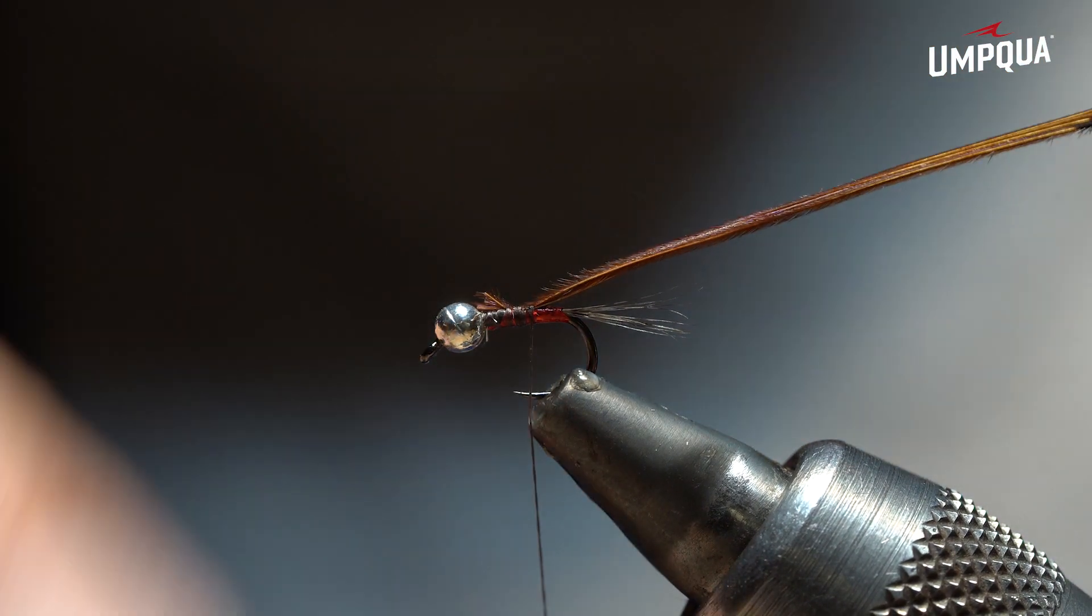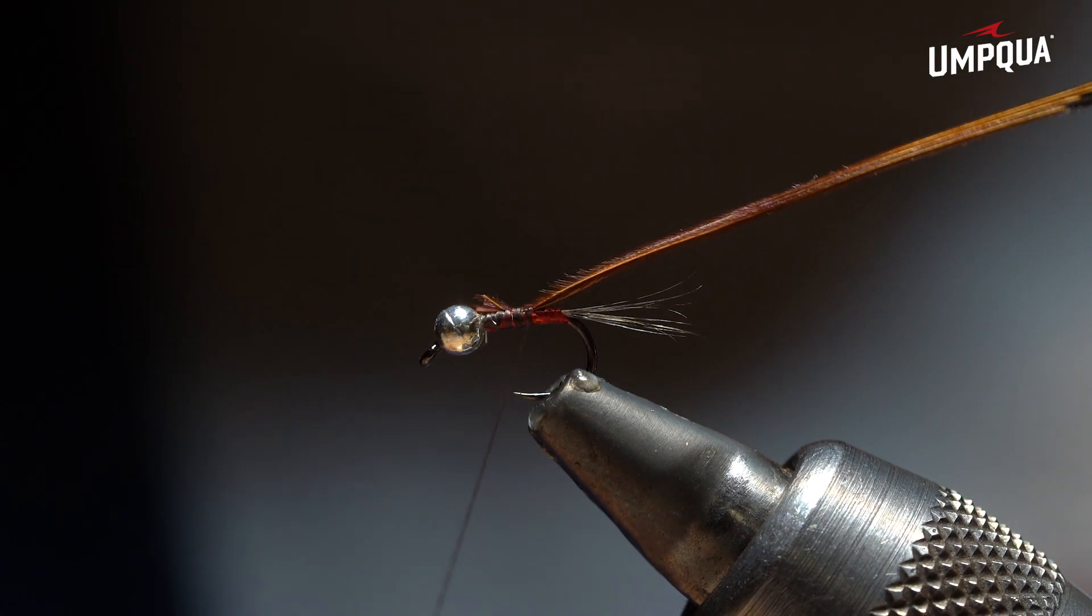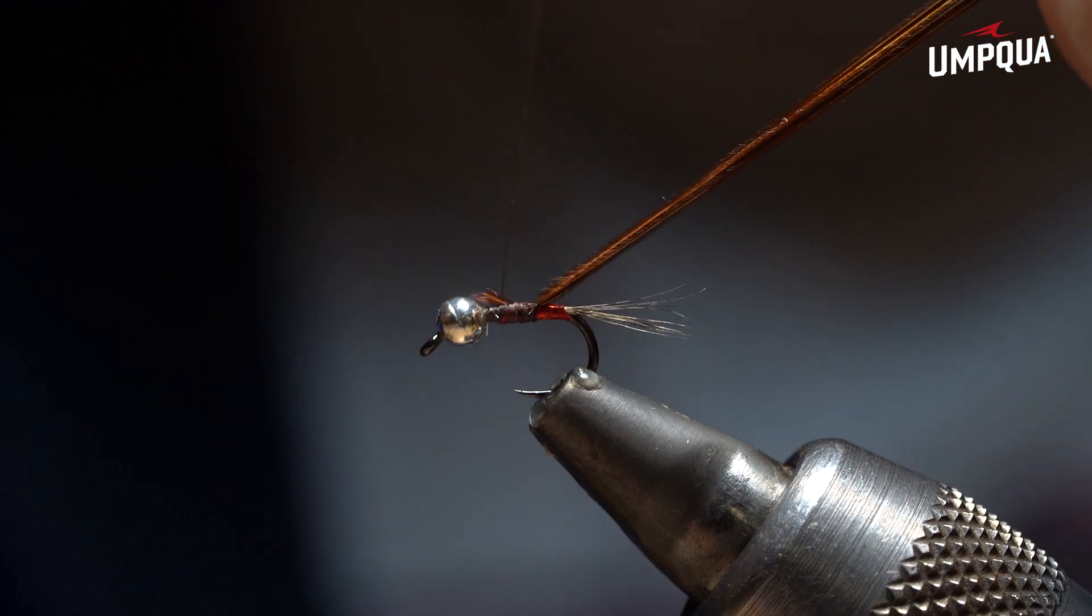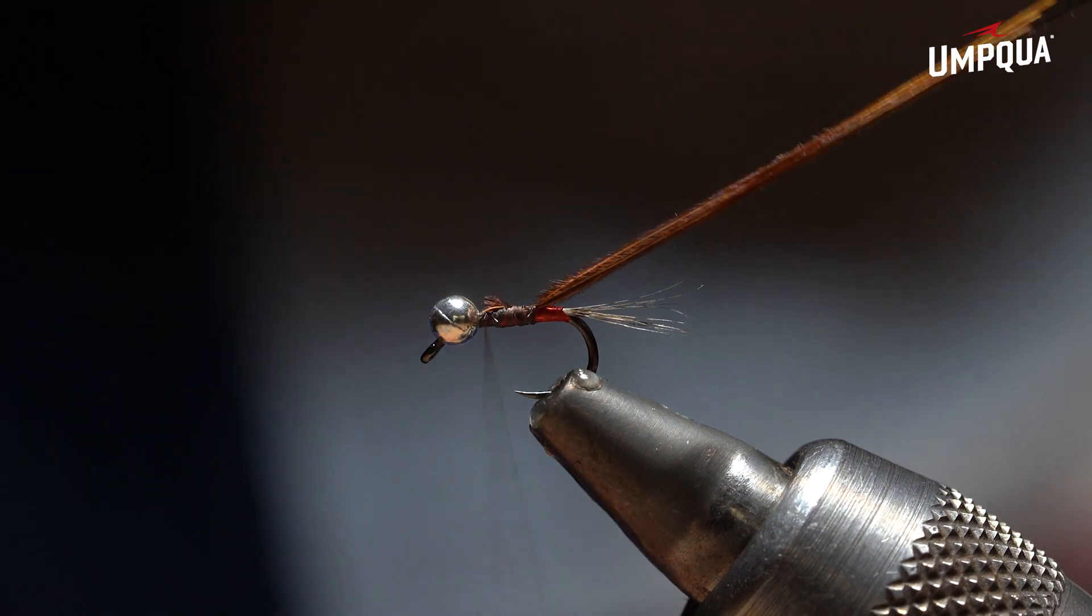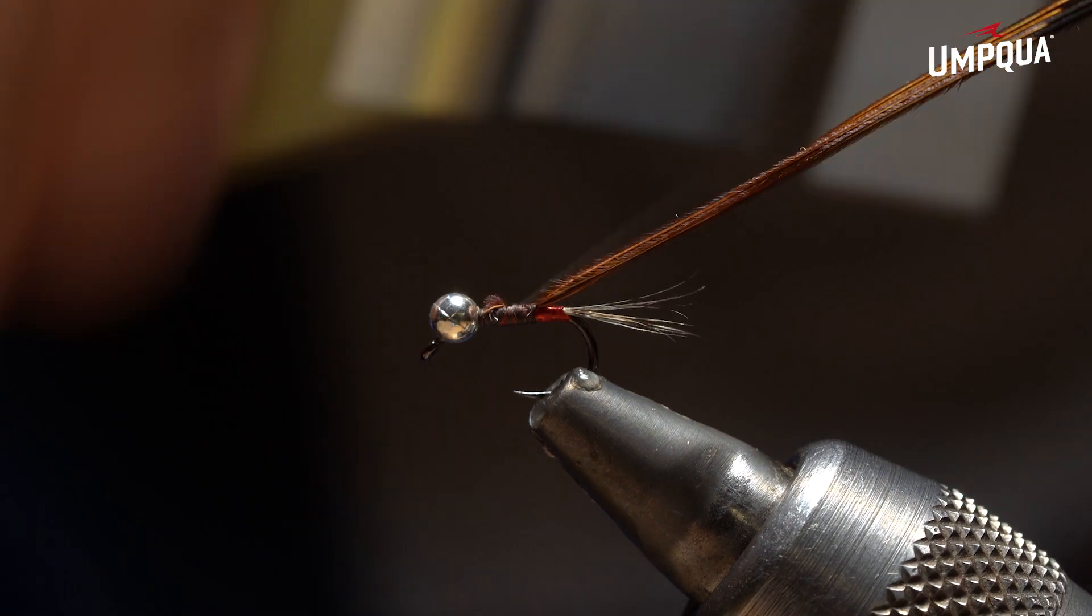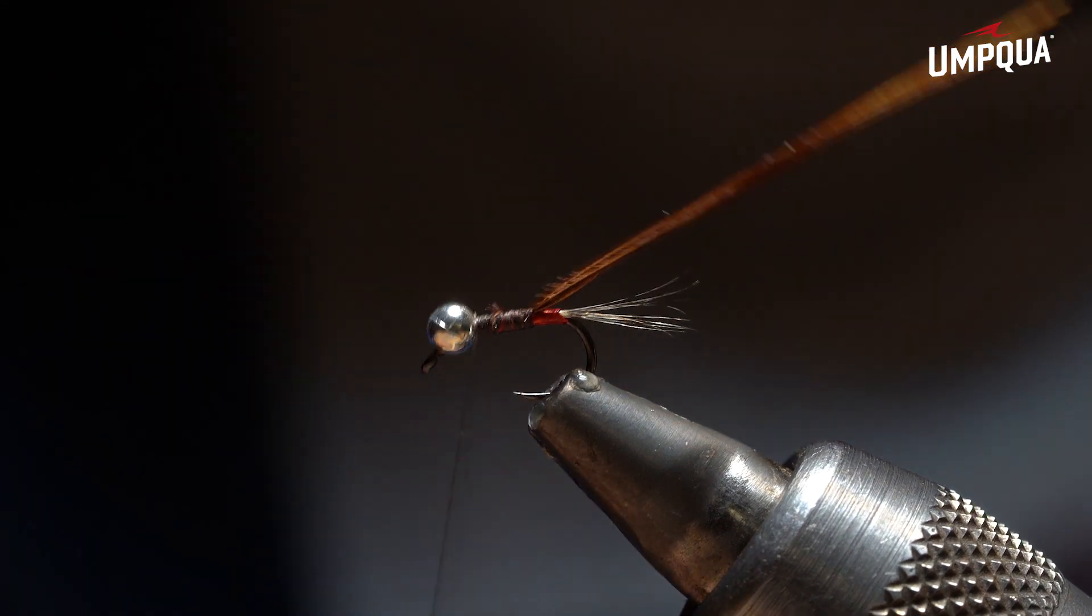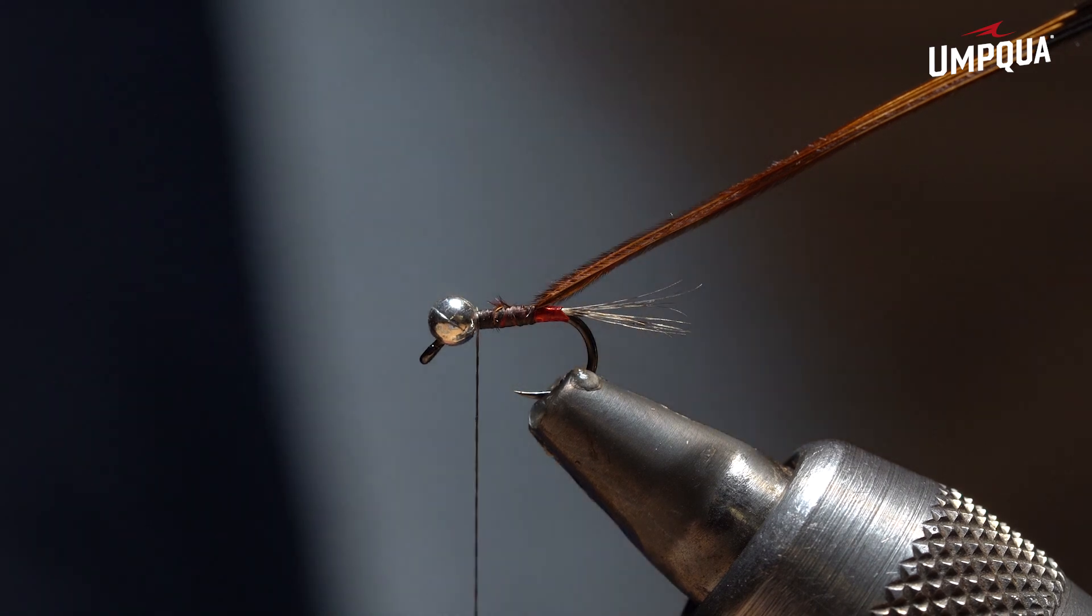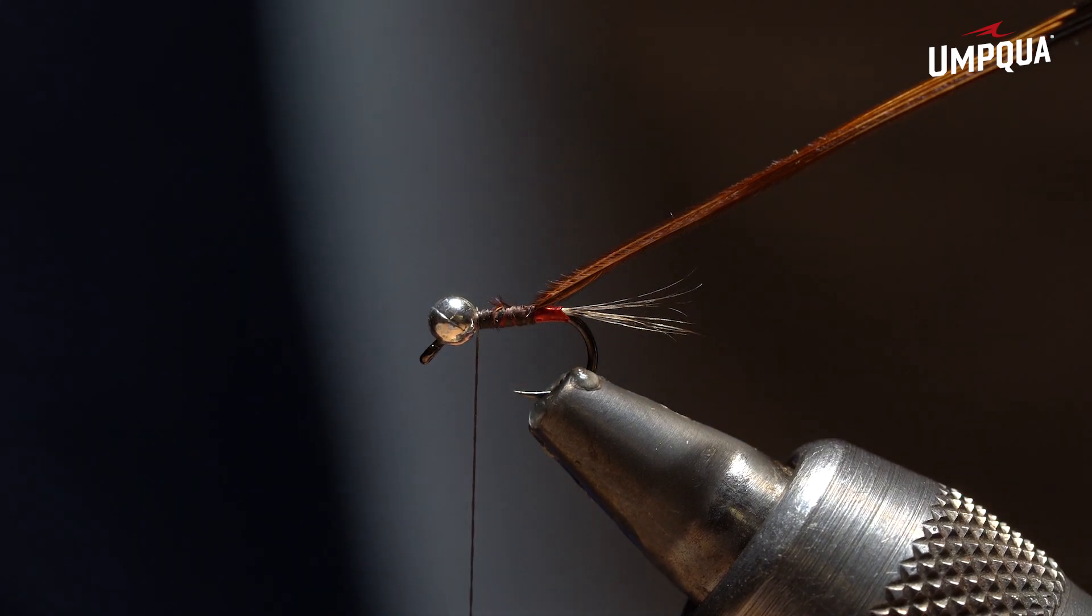Another advantage of this hook is, as you can see, the down eye and the size of the eye of the hook is big, so you can oversize your bead because it will never come out of that hook. We have those problems a lot when you tie on small flies, small hooks, that the bead will come out easily.